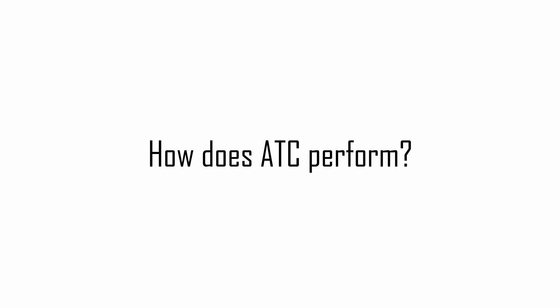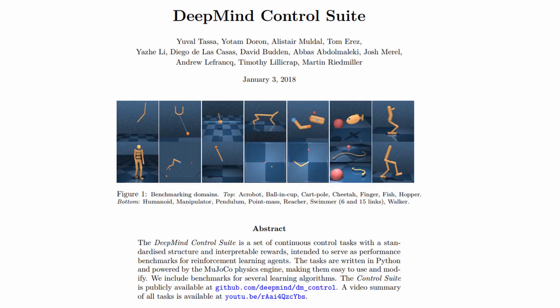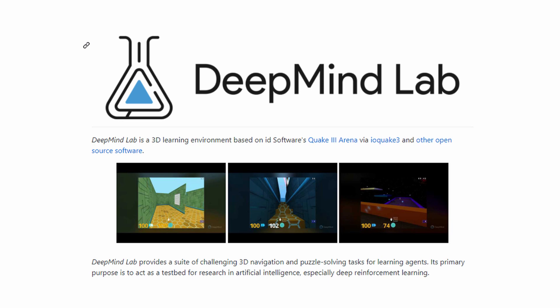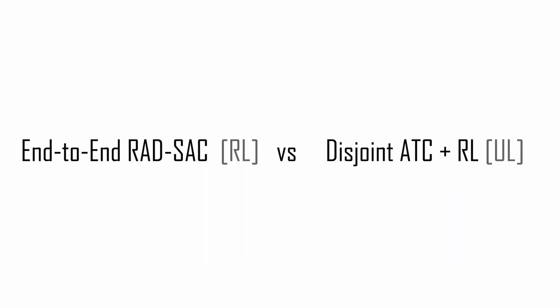The authors of the paper did a thorough evaluation of ATC, on three different reinforcement learning benchmarks, namely DM Control, DM Lab, and Atari, where DM Control has continuous control robotic locomotion and manipulation tasks. DM Lab have complex 3D partial observable environments, and Atari that have discrete control games.